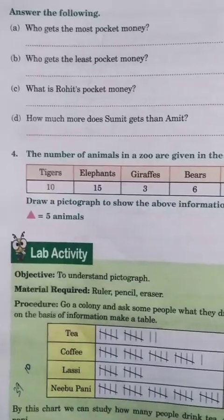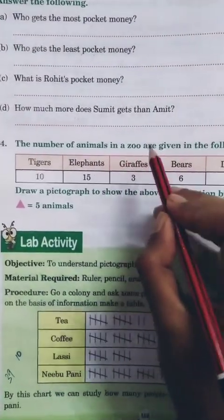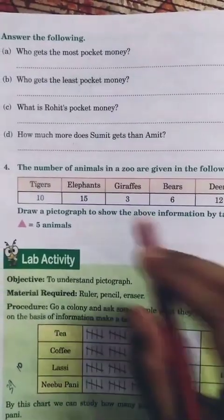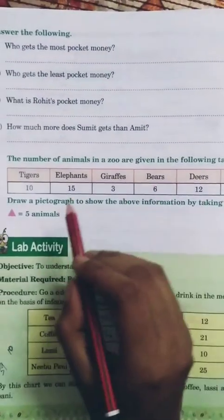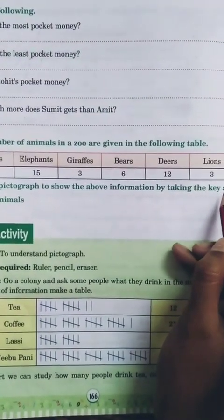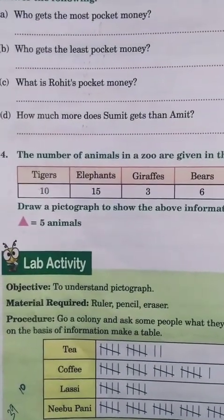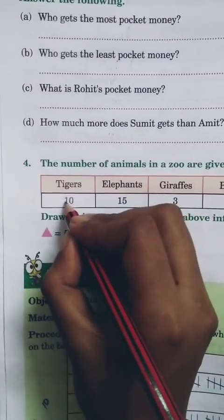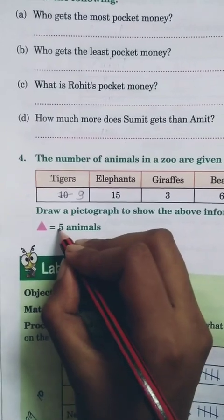Now see question number four from your book. The number of animals in a zoo are given in the following table: tiger, elephant, giraffes, bear, deer, lion. We need to draw a pictograph using a triangle as the key. Note: there is a mistake in the question — correct tiger's count to nine, and the triangle represents three animals, not five.